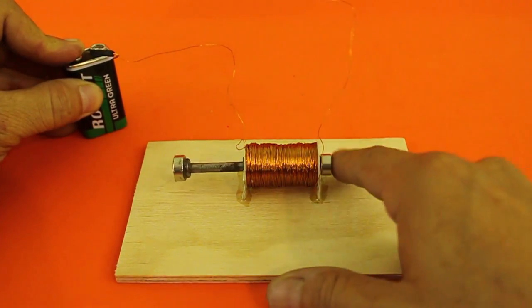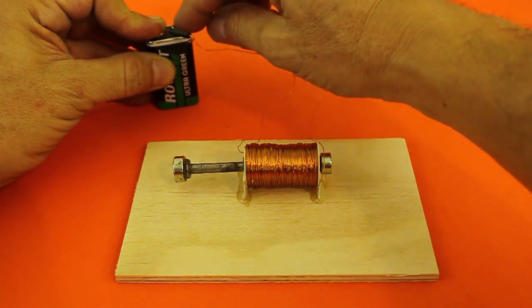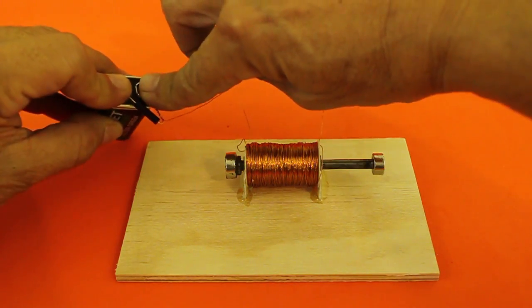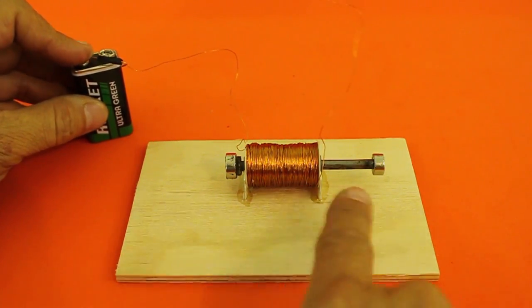Let's do it again. Switch far from the magnet, nothing happens. Bring the switch close to the magnet and then the current passes through the solenoid and the axis moves.